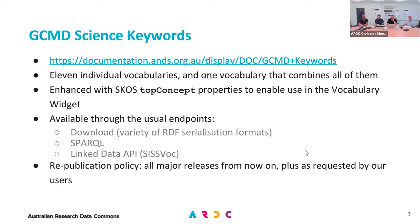I'm happy to admit a certain naivety on my part in terms of just getting my head around what on earth these keywords are and how they work and the different vocabularies. There are, depending on how you count them, 11 or 12. Let's say there are 11 vocabularies that you'll see in RVA, plus a 12th one that I put together that combines all of the rest. So you can make use of that in the vocabulary widget.